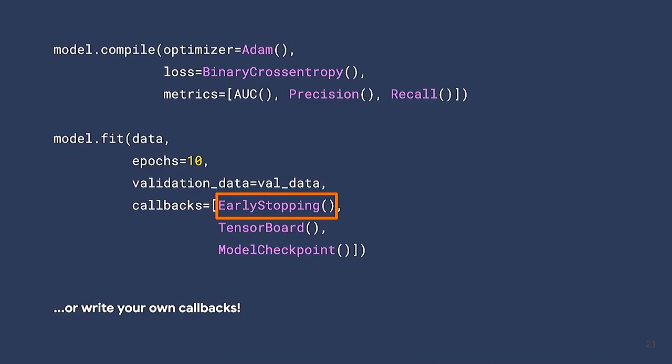Callbacks are really helpful and underused by new developers. One of my favorites is early stopping, which helps prevent overfitting by monitoring your loss over time. You can also write custom callbacks — for example, if you're training a model that takes a long time, you can write a callback to send you a Slack notification after every epoch of training completes.